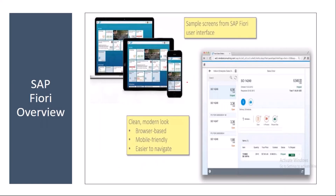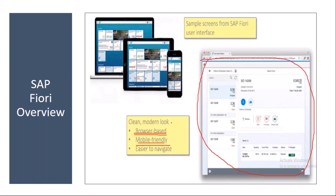The sample Fiori screen looks like this — it is a browser-based application and mobile-friendly. You can access it from a smartphone and it is very easy to navigate. I will show this in the system. Compared with GUI, it is somewhat easier to navigate, and I will show you when we go to Fiori.